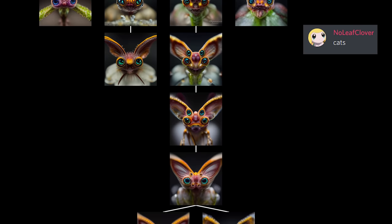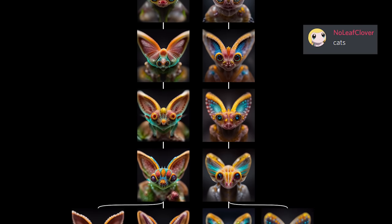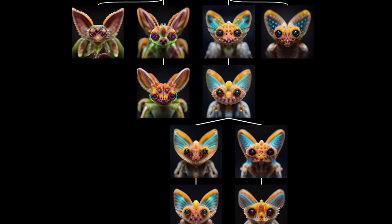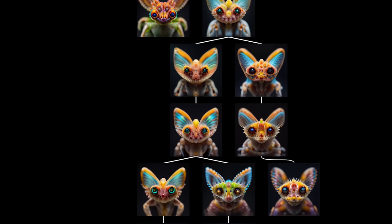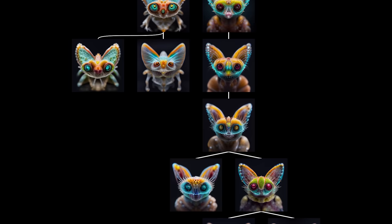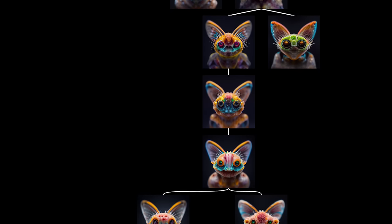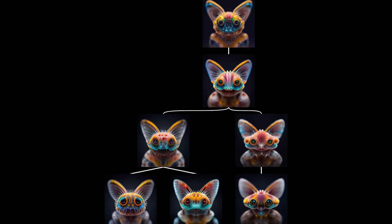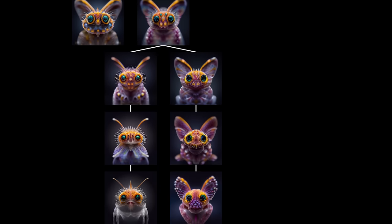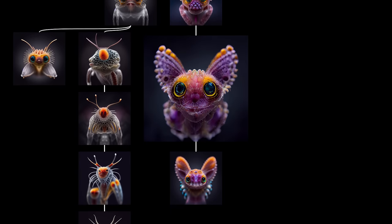Another moderator suggested the community try selectively breeding to create some specific animal. So we tried to make a cat. It took a little while, but you can start to see cat-like features gradually emerge. Eventually, we created what I think is the most cat-like one, this kind of weird, kind of cute cat-bug thing.